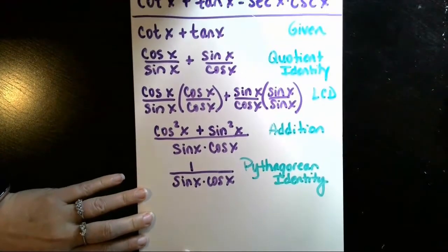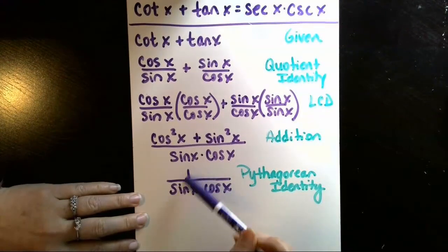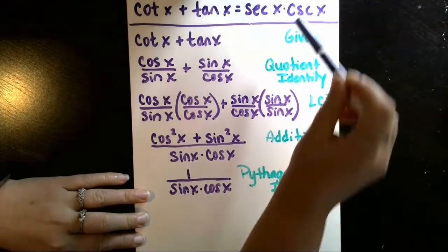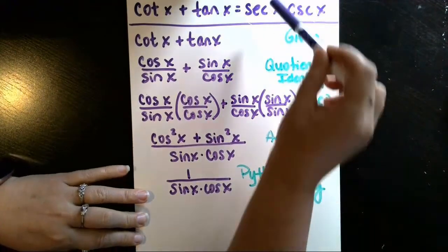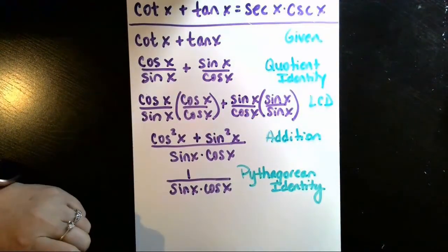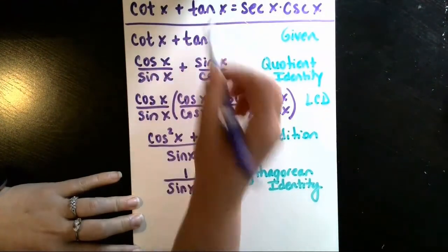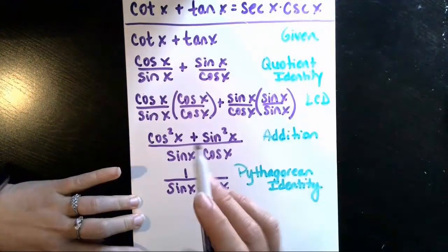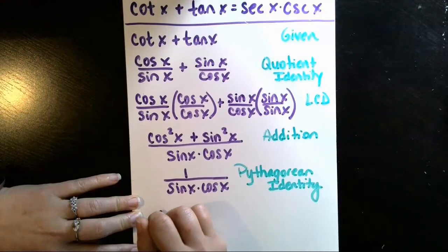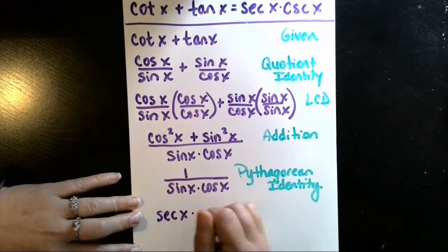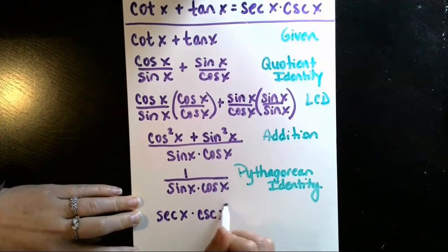And that is excellent news because I know that the reciprocal of sine, one over sine, is the cosecant, and the reciprocal of cosine, one over cosine, is the secant. Those are reciprocal identities, and so I'm done. I've shown that cotangent of x plus tangent of x does in fact equal this other side, the cosecant of x and the secant of x, that product together.